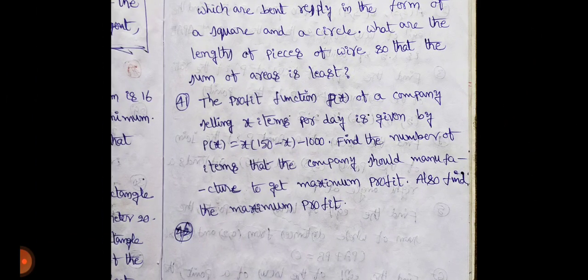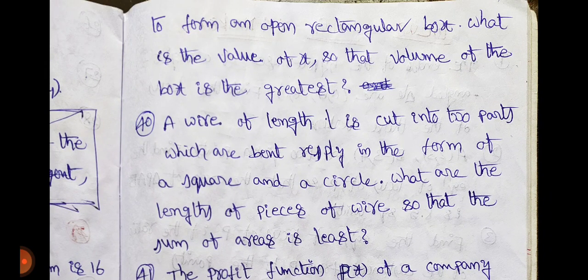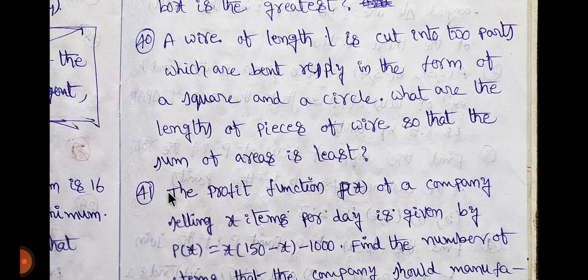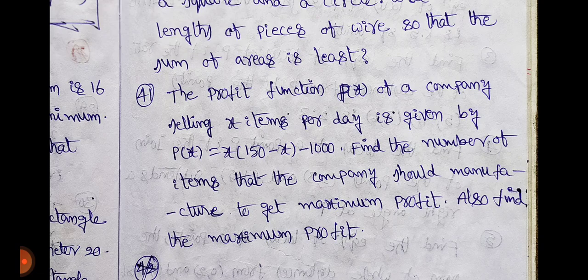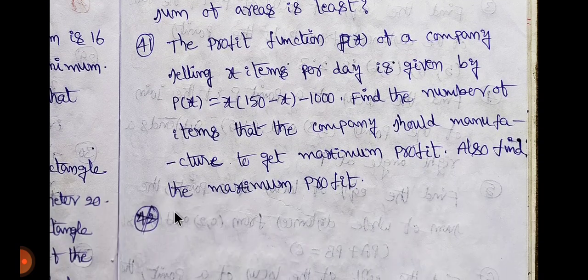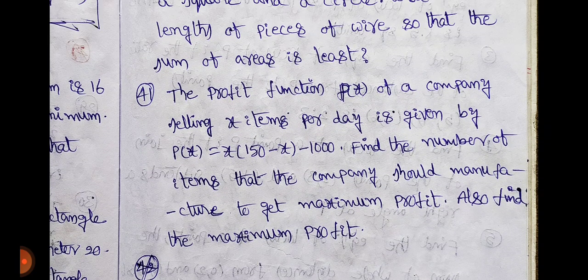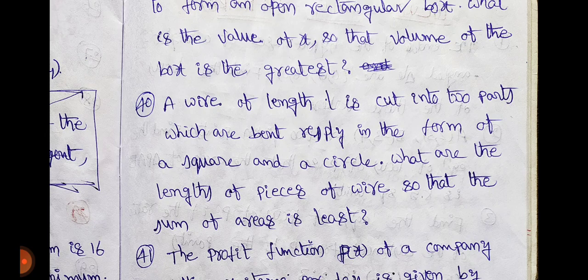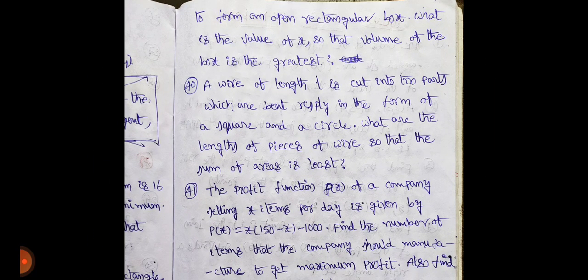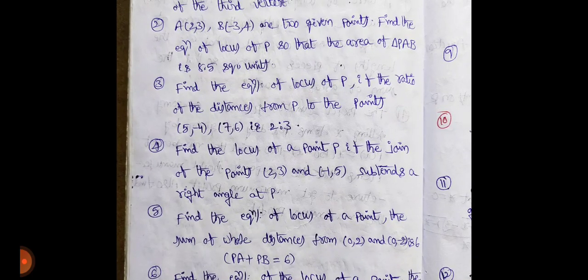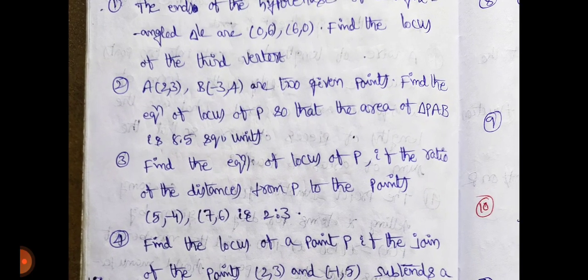Next. Form an open rectangular box. Wire. Profit loss. Total 41. Next. Form a box. Form a box. Form a box.